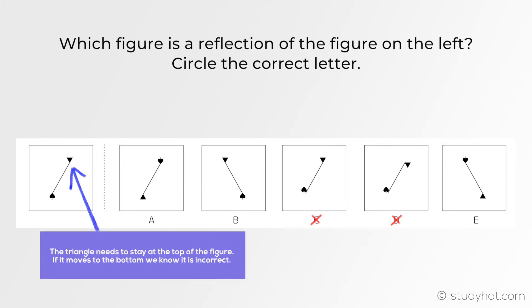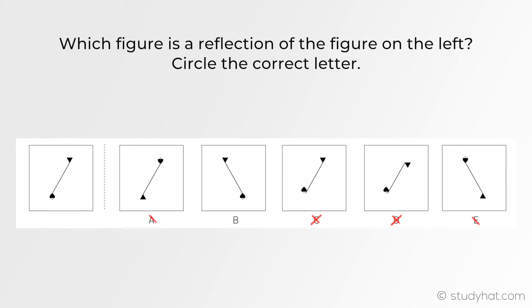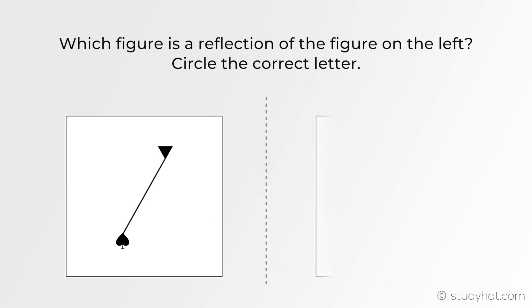So we can also cross A and E off leaving us with B as the answer. Now if we double check it by flipping it the shape should perfectly align. And there it is.